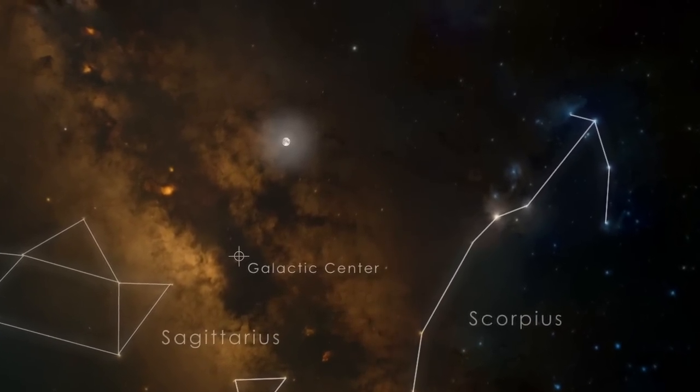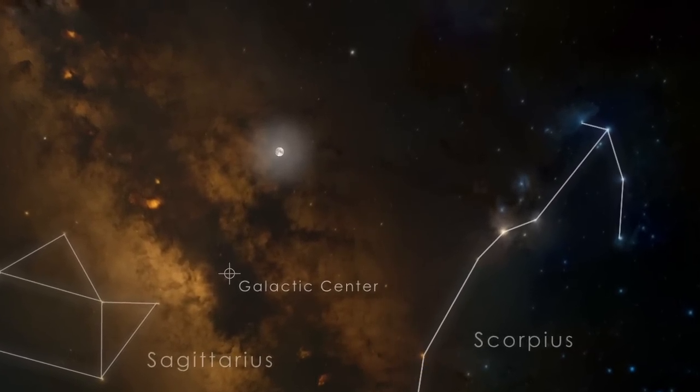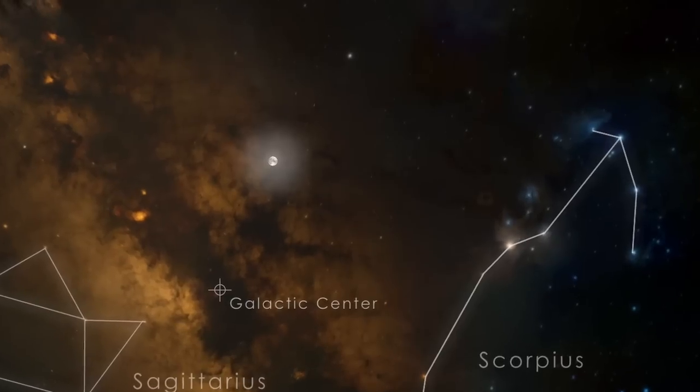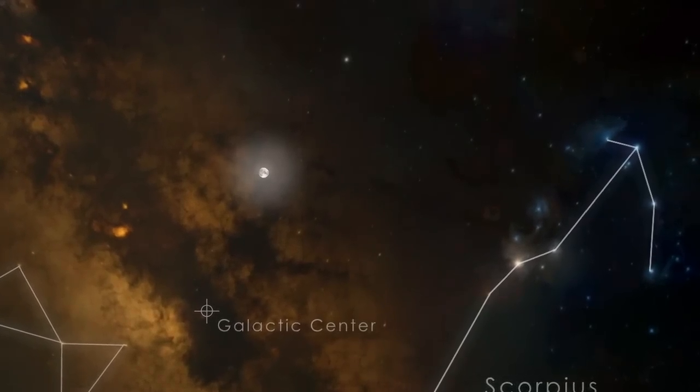Thick dust clouds block our view of the central region in visible light. But satellites like NASA's SWIFT, which detect X-rays, can see straight through them.